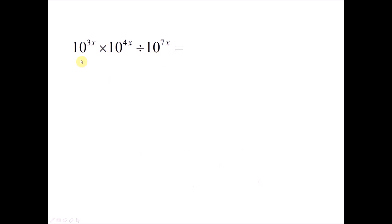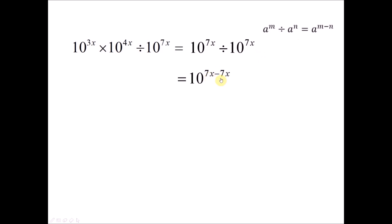Now we want to simplify the next expression. First we check the base number — they all have the same base. For the multiplication part, 3x plus 4x gives 7x. For the division, we use the formula: when you divide indices, you subtract — m minus n. So this simplifies to 10 to the power of 7x. When you divide by 10 to the power of 7x, it becomes 7x minus 7x, giving 10 to the power of 0, which equals 1.